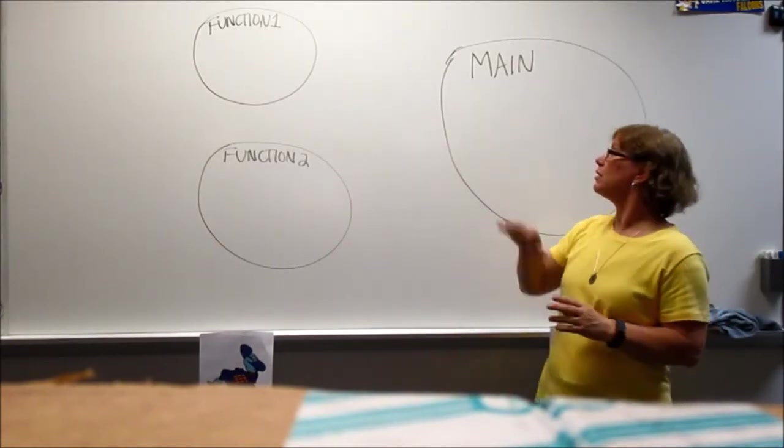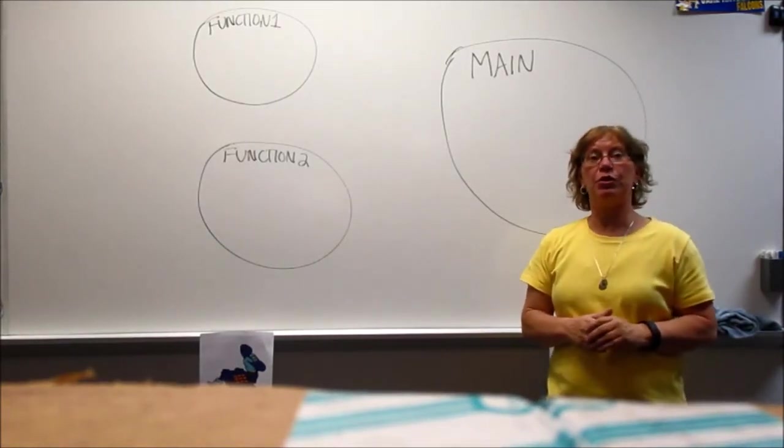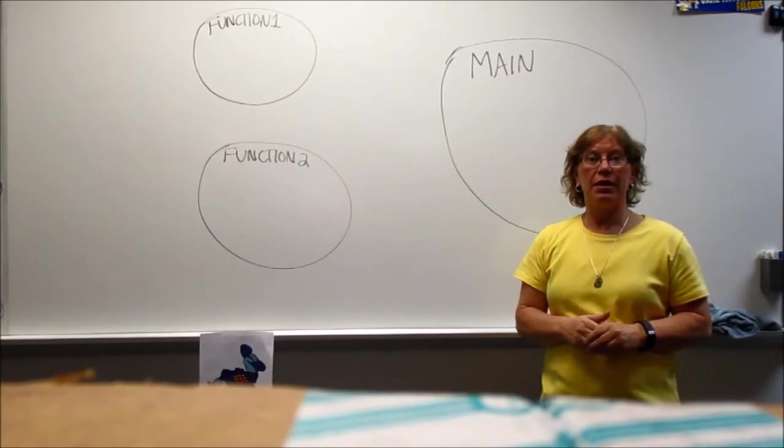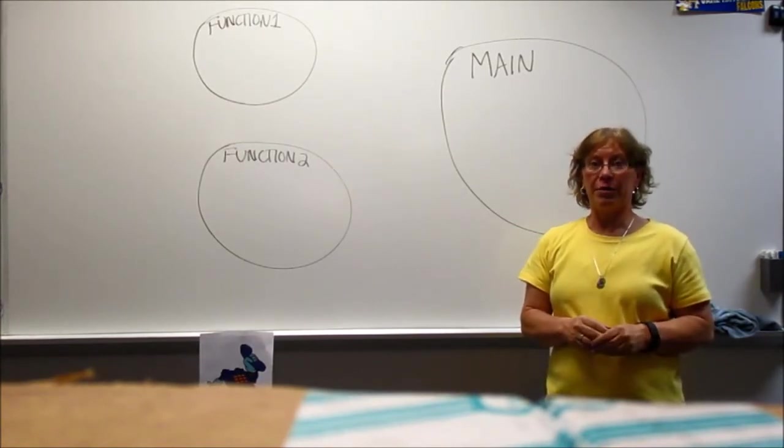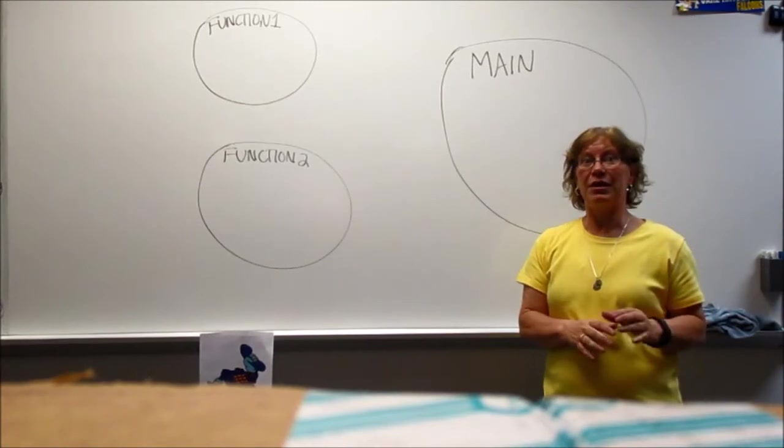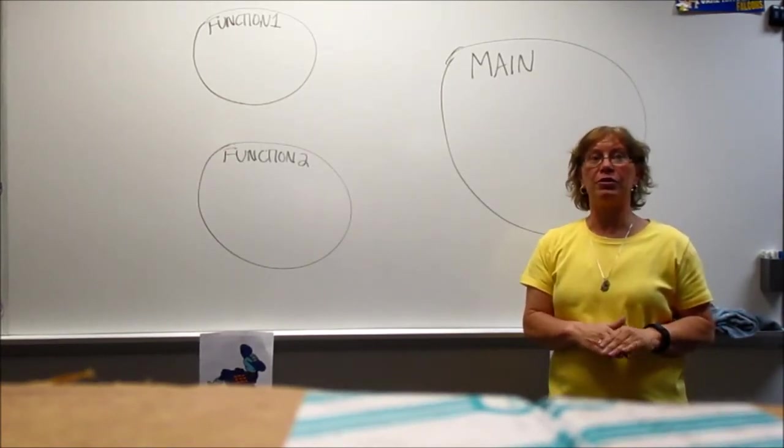Now we're going to declare variables here in the main function and we want to do this to avoid global variables. Now you've used global variables before with event-driven programming and it's kind of a necessity then until we get into classes, but at all costs you want to avoid global variables if you can.